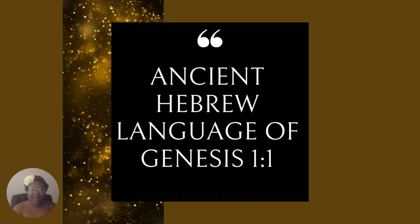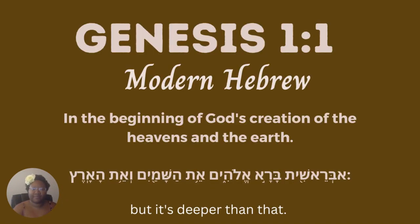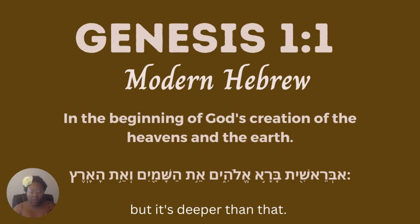I am so happy. So Genesis 1. We all heard — this is the modern Hebrew. This is the English translation. It says, in the beginning, God created the heavens and the earth, and we see the modern Hebrew. But as you know, it's much deeper than that.